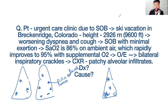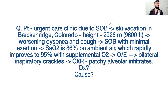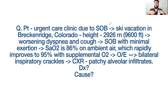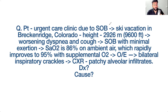The patchy alveolar infiltrates in high altitude pulmonary edema result from V/Q mismatch causing localized high hydrostatic pressure. Another condition with patchy alveolar infiltrates is lung contusion after a road traffic accident where the patient hits the chest wall. Initially the chest X-ray may be normal, but after 24 hours you see irregular patchy opacity — that is your lung contusion.